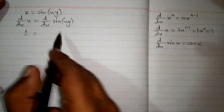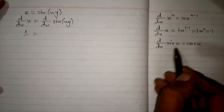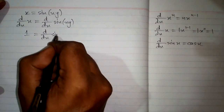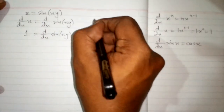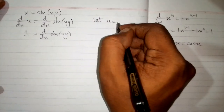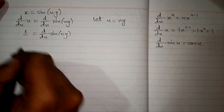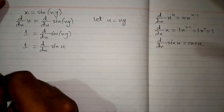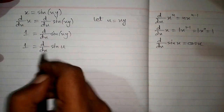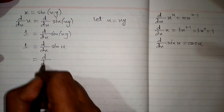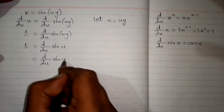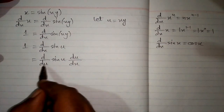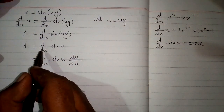We cannot apply the derivative of sin formula directly here because the variable inside must match. So, we let u equal to xy. We then have d by dx of sin of u, but we don't have the same variable, so we apply the chain rule and multiply by du by dx. We can cancel du and get d by dx again.